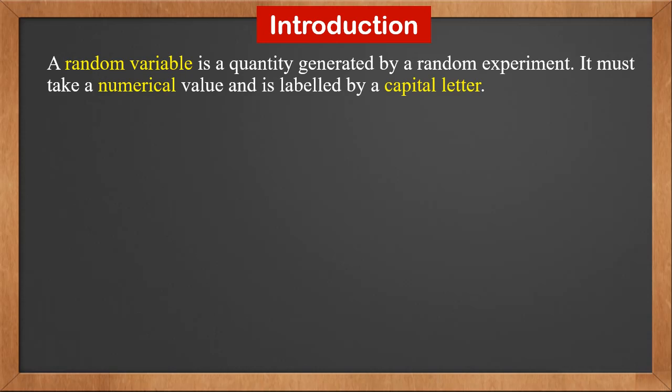A random variable is a quantity generated by a random experiment. It must take a numerical value and is labeled by a capital letter. For example, capital X is the number a die lands on when it's thrown. It is random and not predictable.